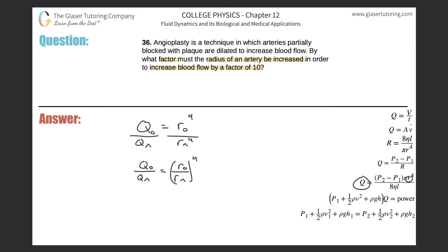Now they say we want to figure out how much must the radius of the artery be increased to increase the blood flow by a factor of 10. So essentially they're saying that the new flow rate has to be 10 times that of the original flow rate. So now I can take this and plug it in for q sub n.